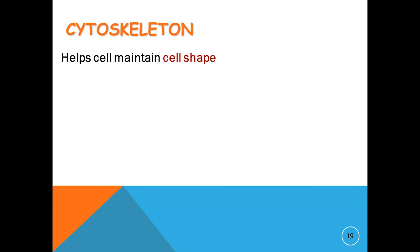The next one is cytoskeleton. As the skeleton helps us to maintain our shape, the cytoskeleton also helps the cell to maintain its cell shape. This also helps the organelles to move around.